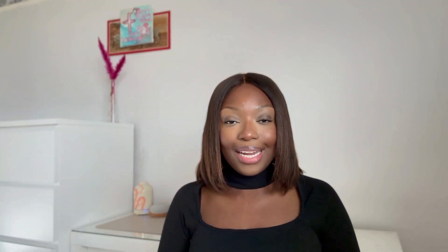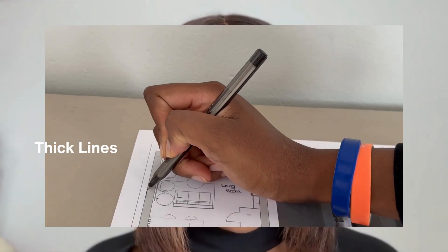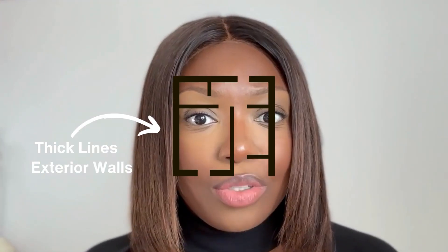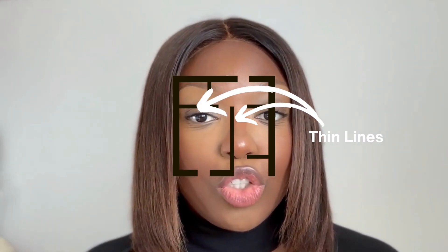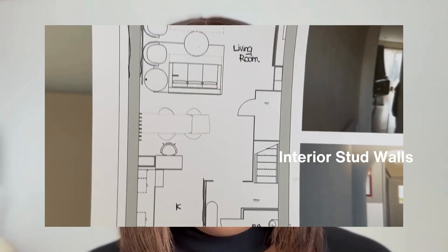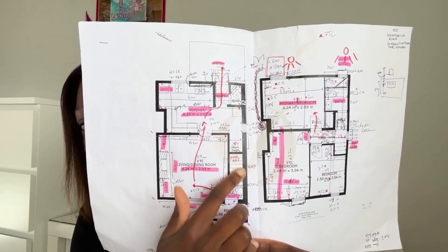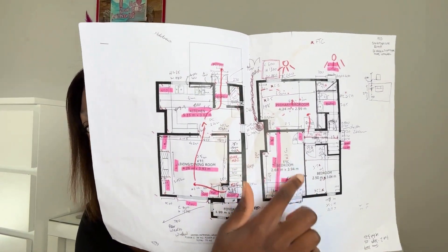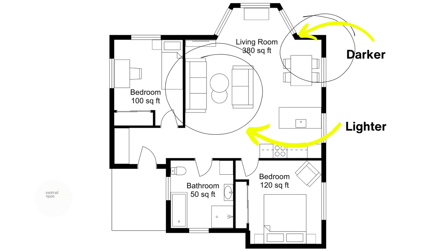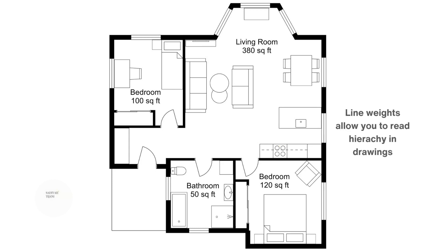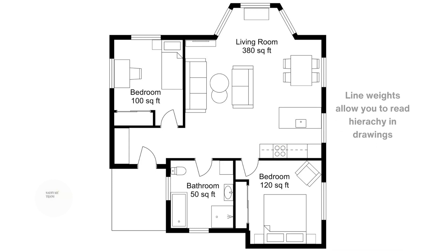Number one: line weight. In floor plans, different line weights are used to represent different elements. The thicker, heavier line weights tend to represent harder elements such as walls and floors. The thinner elements tend to represent smaller elements such as stud walls, partitions or smaller openings. In this floor plan you can see that the furniture is shown in the lightest line weight and the walls are represented in the heaviest line weight. The variation of line weights creates hierarchy in the drawing and demonstrates relationships between elements.